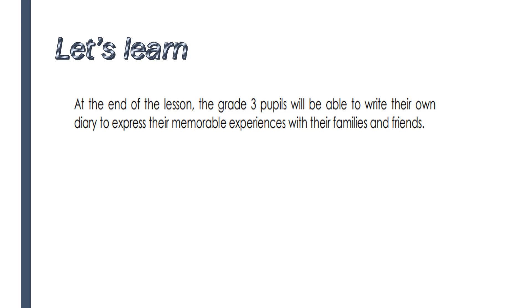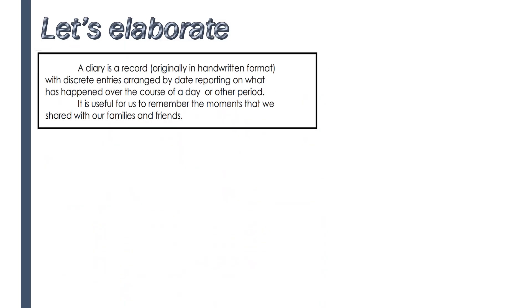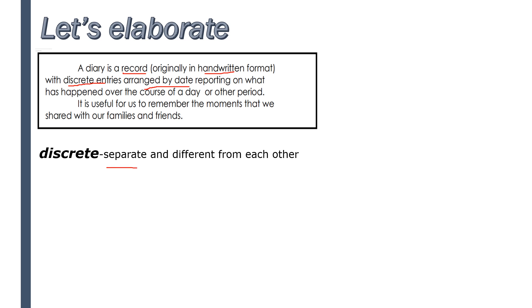What is memorable? It means very good or interesting. What is a diary? Remember kids, a diary is a record — originally in handwritten format — with discrete entries arranged by date. What is discrete? It means separate and different from each other.